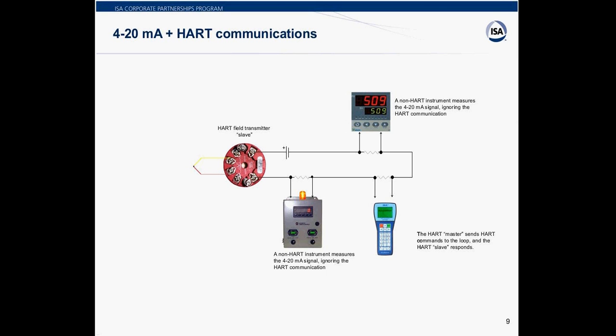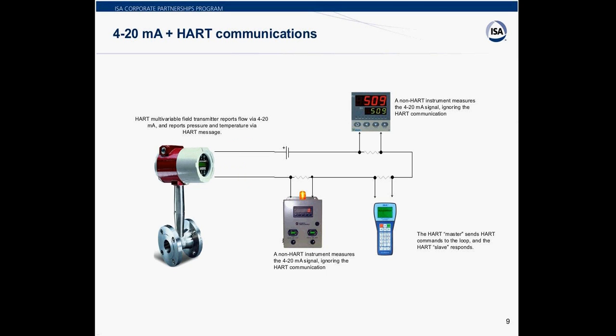Some HART transmitters can measure more than one sensor at a time — these are called HART multivariable transmitters. This is a picture of a gas flow transmitter that also measures the pressure and temperature of the gas flowing through it. The flow measurement is called the primary variable, and it controls the 4 to 20 milliamp loop current. The pressure and temperature measurements are the second and third variables, and these measurements are transmitted digitally in the HART message. A HART master flow computer could be used on this loop to measure all three variables and compensate the flow measurement as gas pressure and temperature change, resulting in accurate flow measurement under a wide range of conditions.